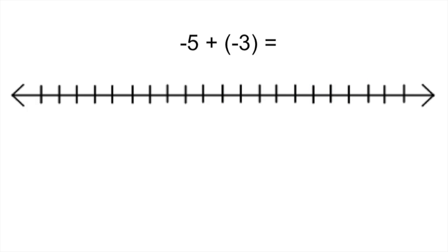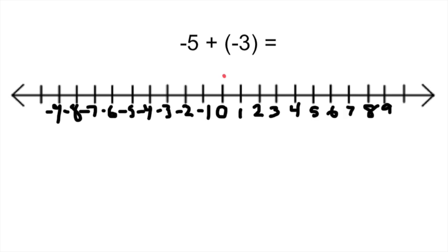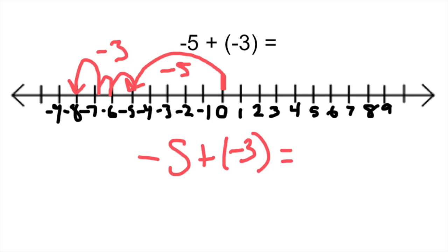Now let's model on the number line negative 5 plus negative 3. Just like last time, start at 0 and go in the direction of the first number. So in this case, we go from 0 to negative 5. Now we're adding a negative 3. Should the negative 3 go up the number line or down the number line? Well, minus 3 should go down, so we go negative 3 to the left, and we see that we end up at negative 8. Negative 5 plus negative 3 is negative 8.